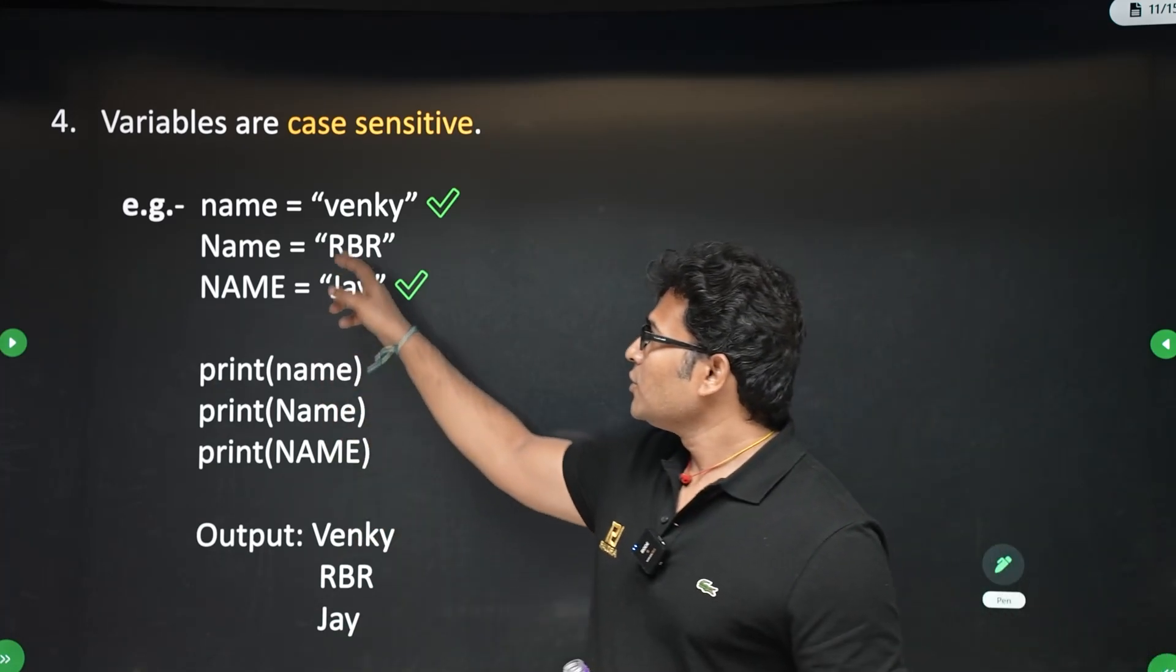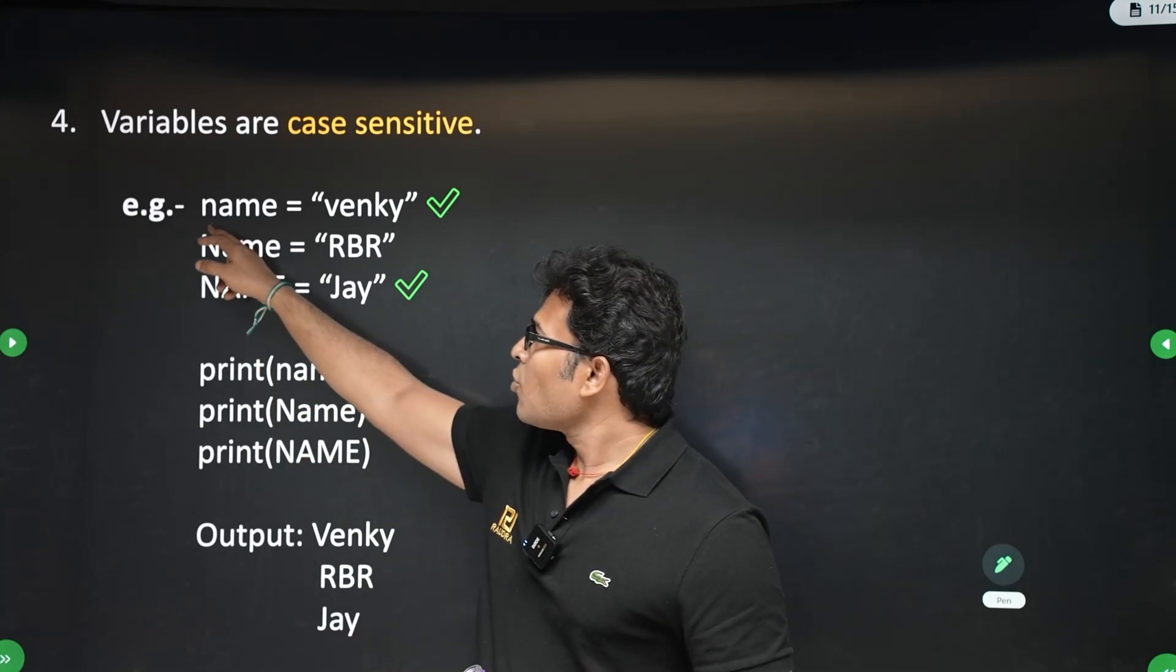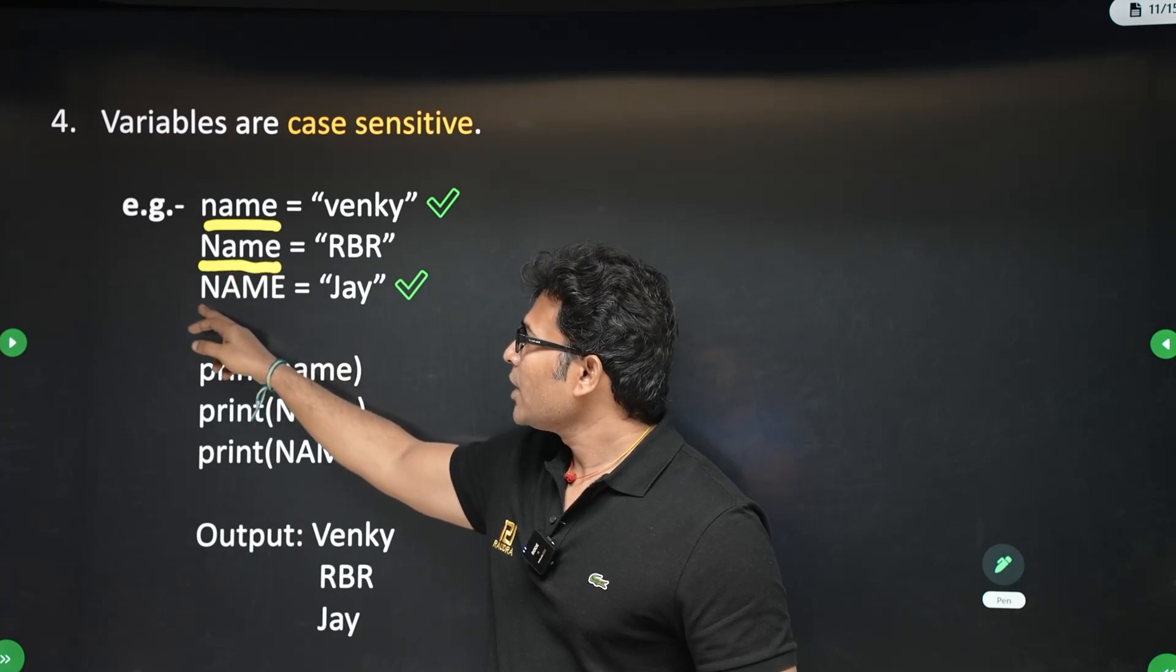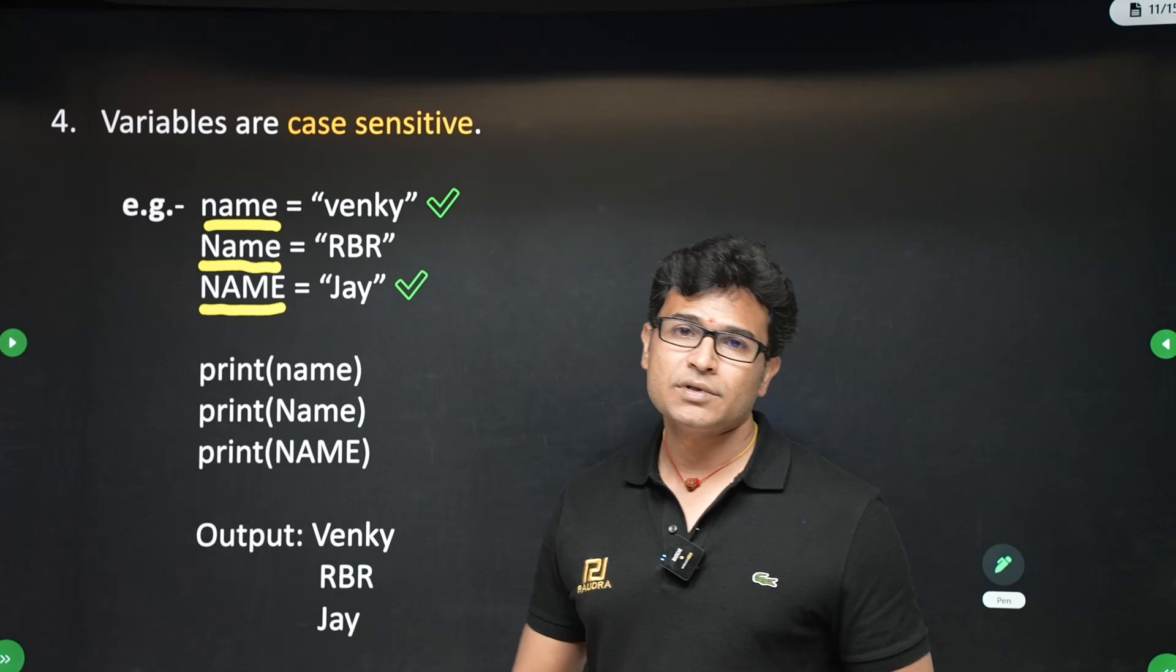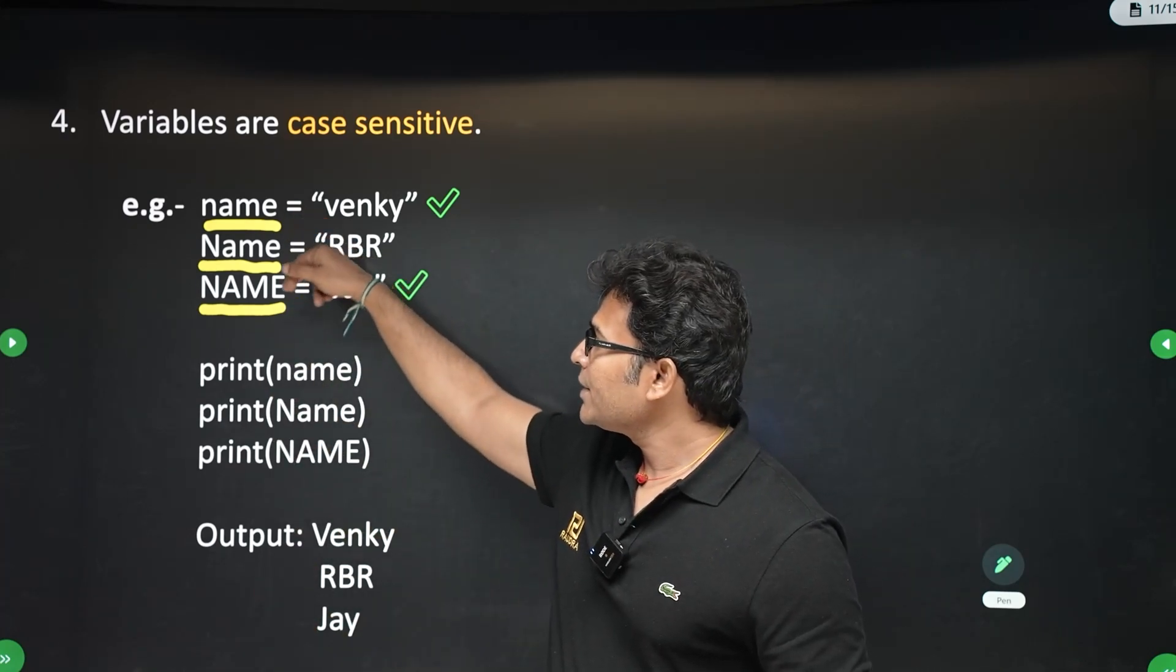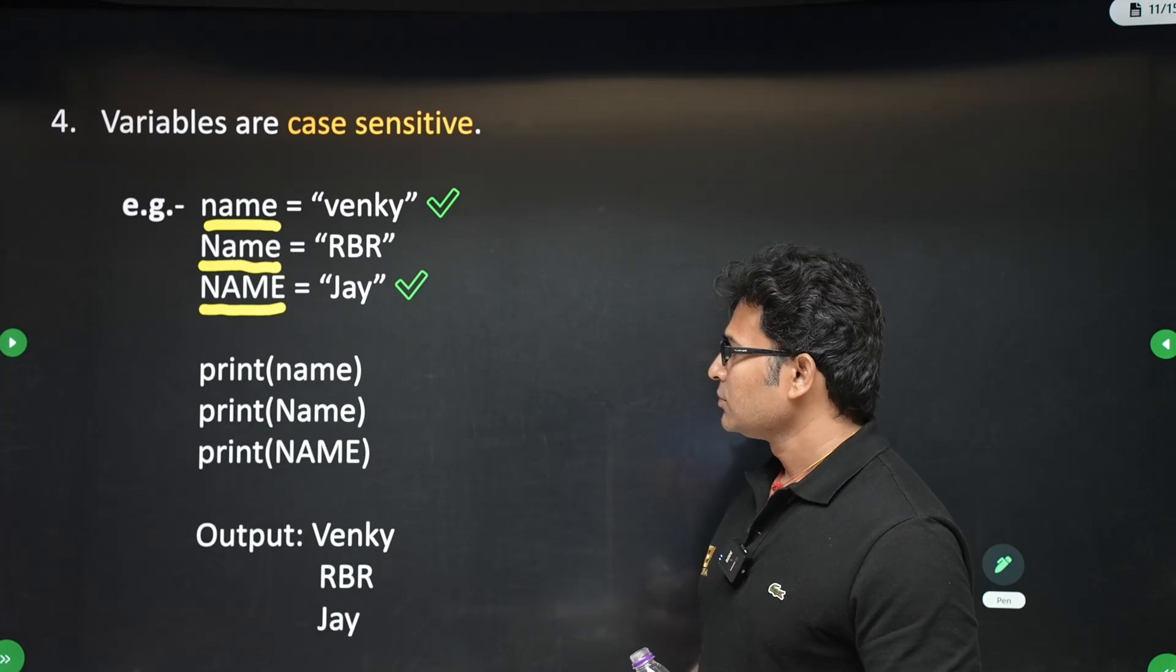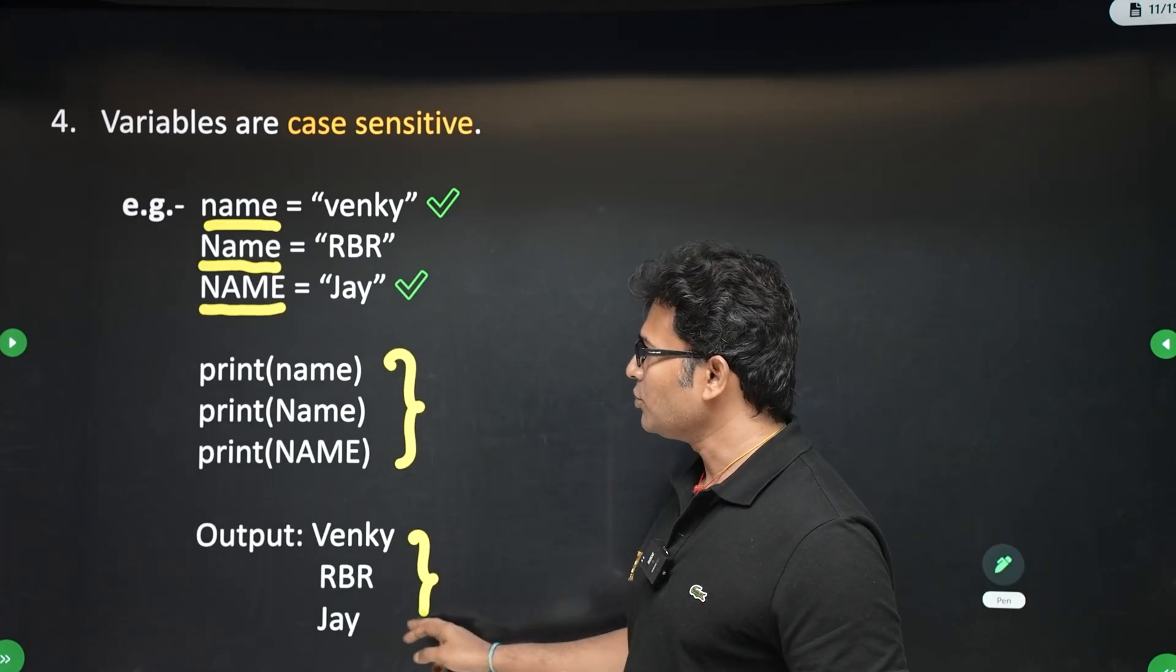Now variables are case sensitive. For example, they are all strings, they are all string variables. Now, small name, capital N in the name, and all caps - all these are treated as different variables. All of them are strings. So if you try to print what is in there, you are going to see the output like this.